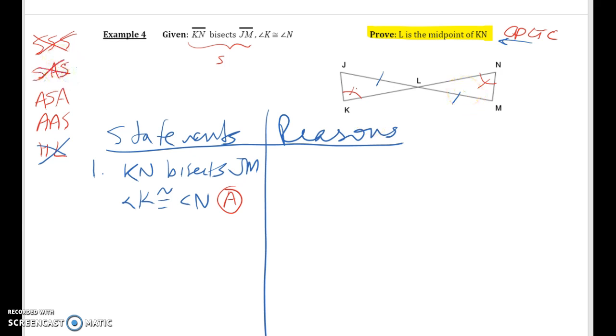Side-side-side is out, we don't know anything about the other side, so side-angle-side is out. We're looking for another angle basically. One thing I want to point out is that L is the midpoint of KN, which means to show that we will need to show that KL is congruent to LN, and we're going to use CPCTC.